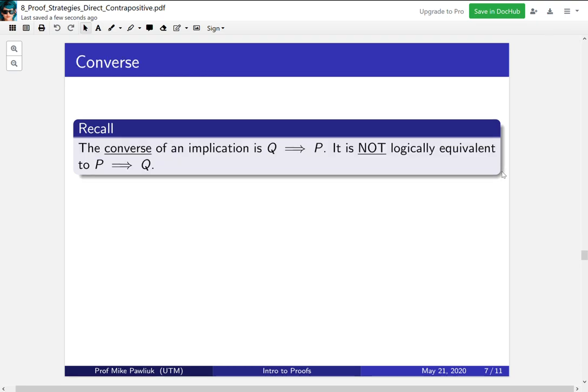One comment before we leave this is the contrapositive is often confused by students with the converse. To remind you, the converse of an implication is Q implies P, and generally it is not logically equivalent to P implies Q. So if you're trying to prove P implies Q, you can't instead prove the converse.